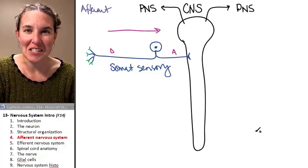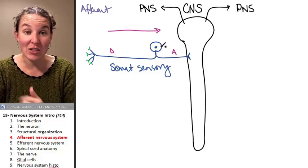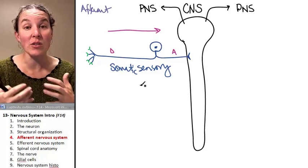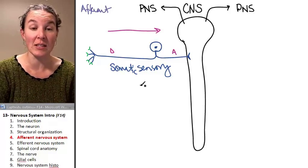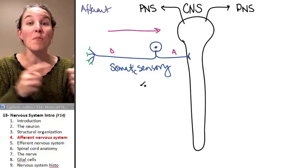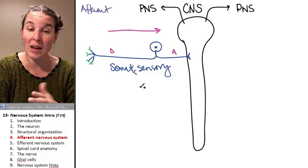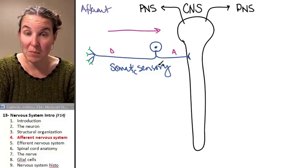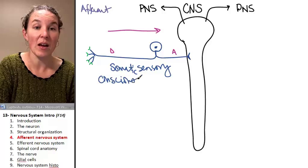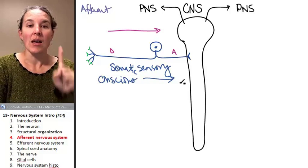Information can be somatic sensory. A neuron that carries somatic sensory information to the central nervous system can be described as somatic sensory. Sometimes we call this neuron, this pathway, a fiber. The fibers can be somatic sensory. The bottom line is that you're conscious of the information, and it's traveling toward the central nervous system. That's one flavor.